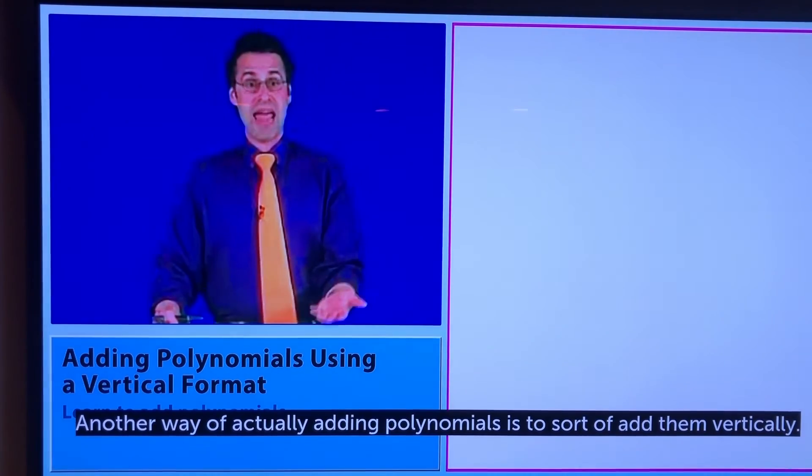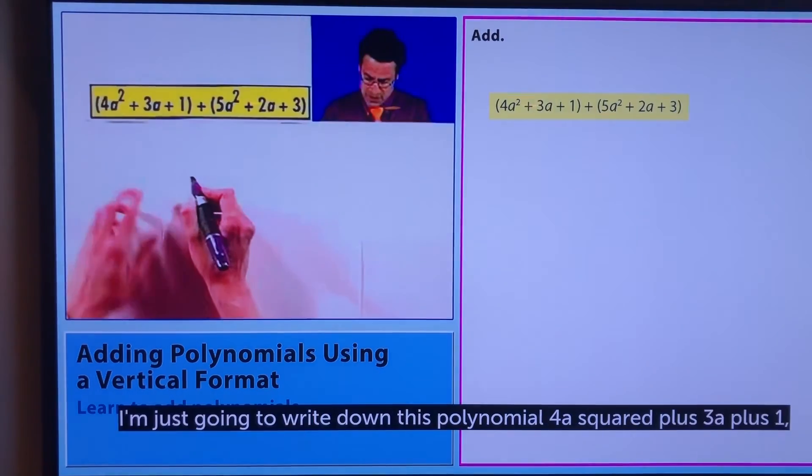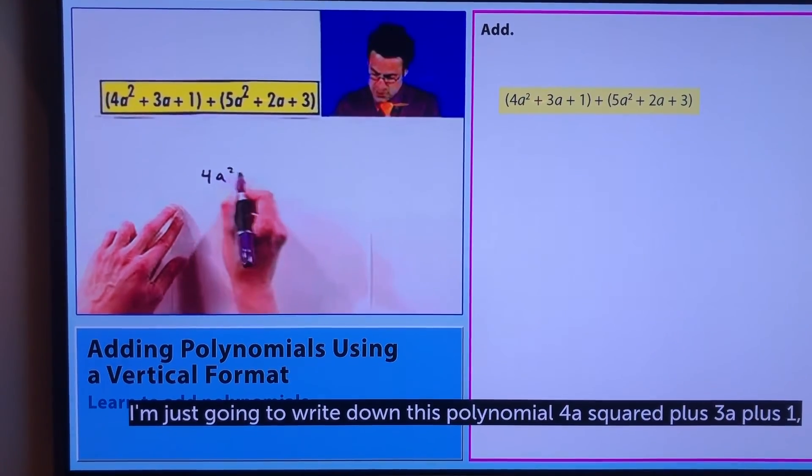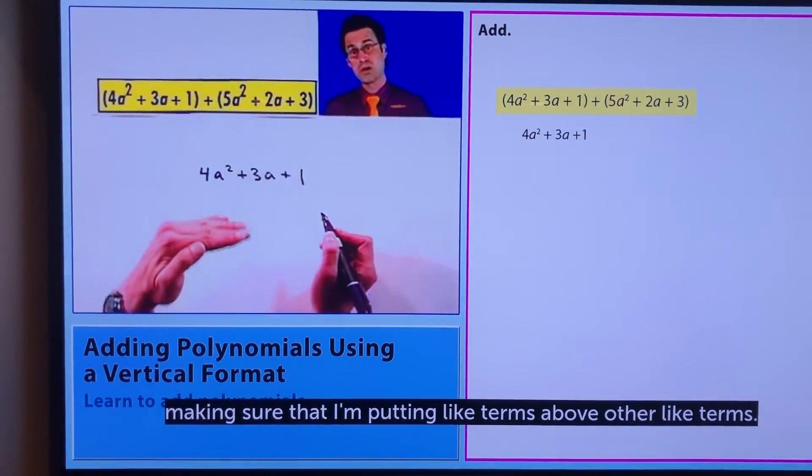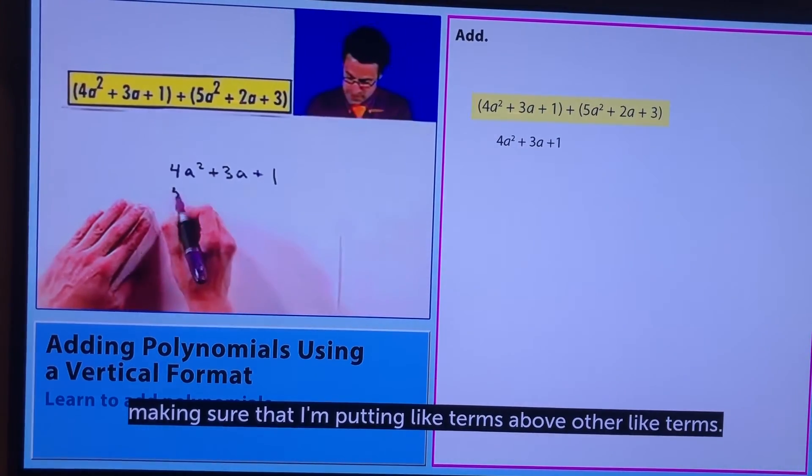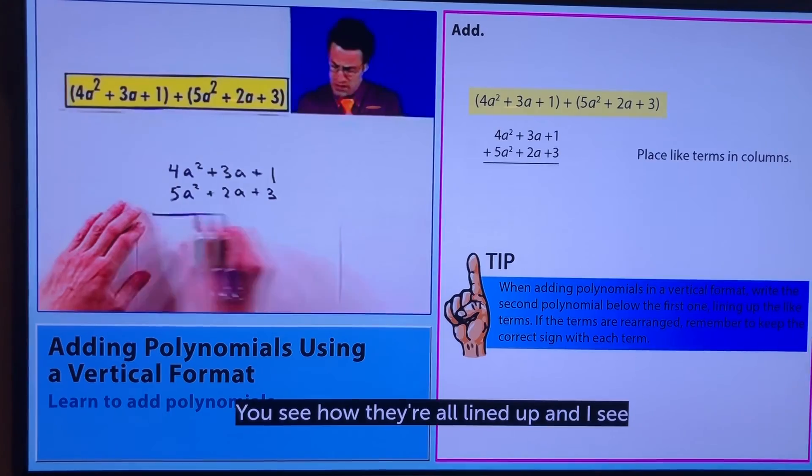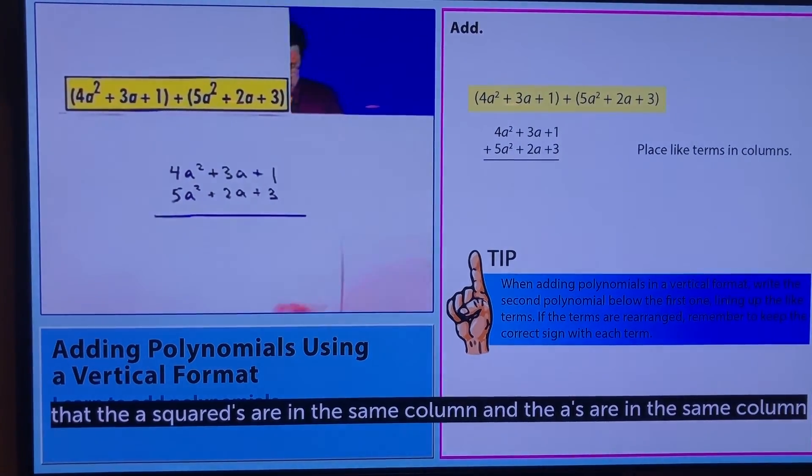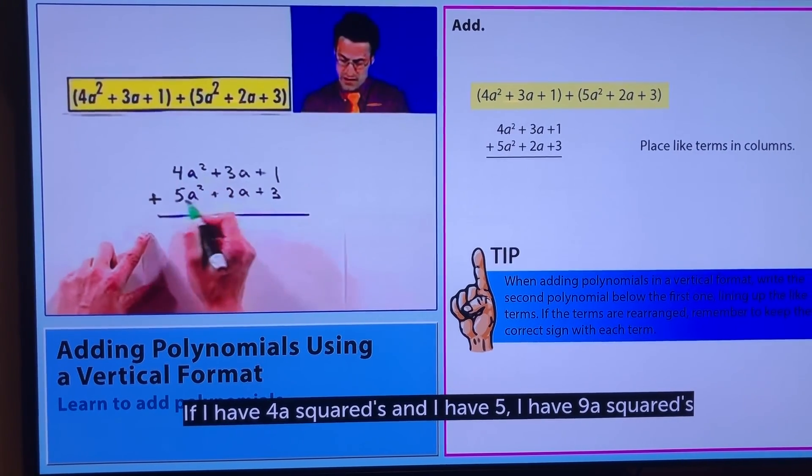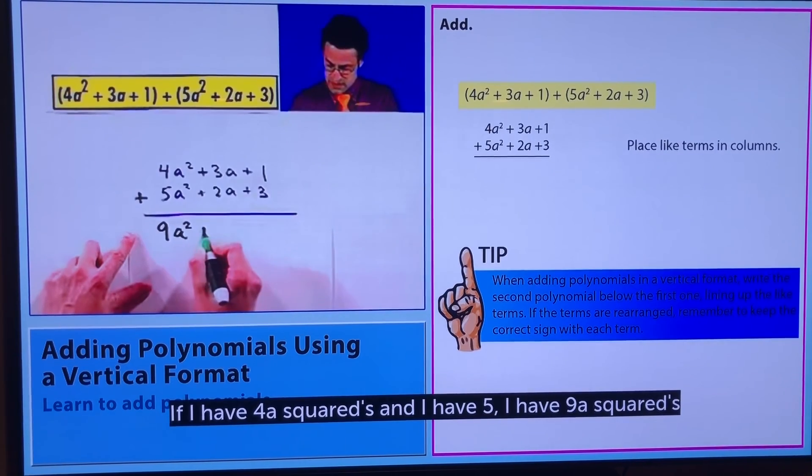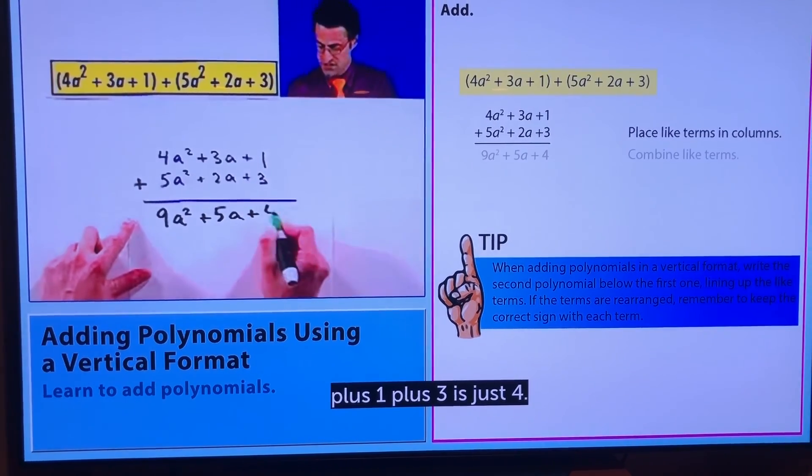Another way of actually adding polynomials is to sort of add them vertically. Let me show you what I mean. I'm just going to write down this polynomial 4a squared plus 3a plus 1, and then write this one underneath it making sure that I'm putting like terms above other like terms: 5a squared plus 2a plus 3. You see how they're all lined up and I see that the a squareds are in the same column and the a's are in the same column and so are the constants. So I can just add: if I have 4a squared and add 5 I have 9a squared, plus 3a plus 2a or 5a, plus 1 plus 3 is just 4.